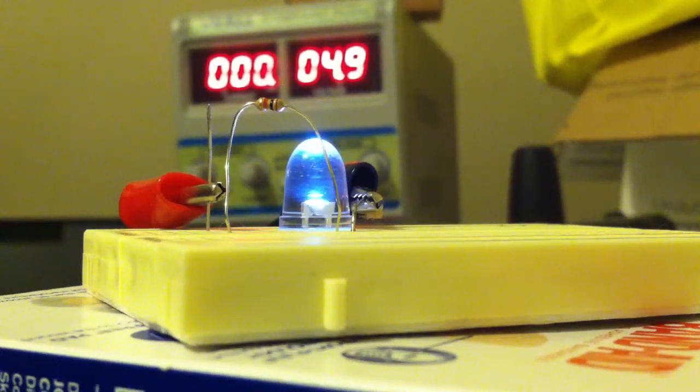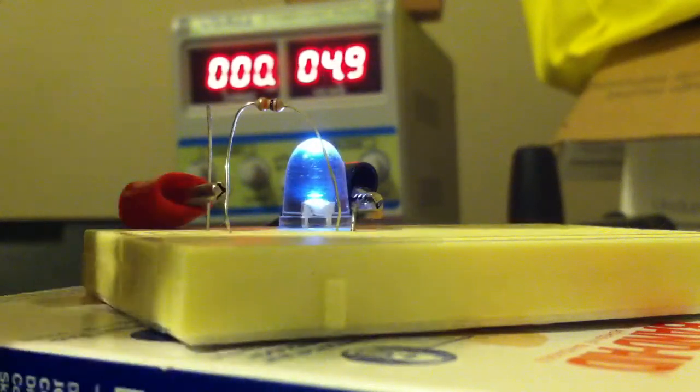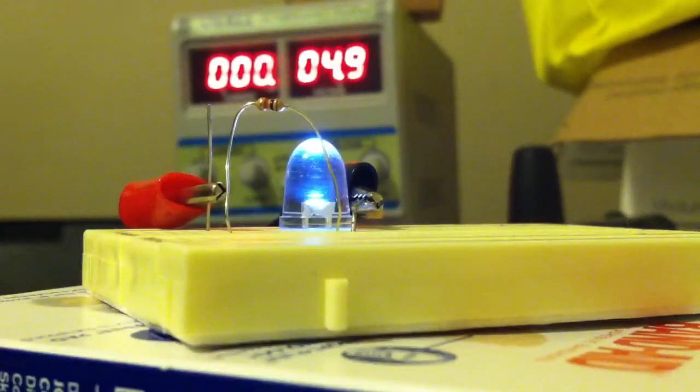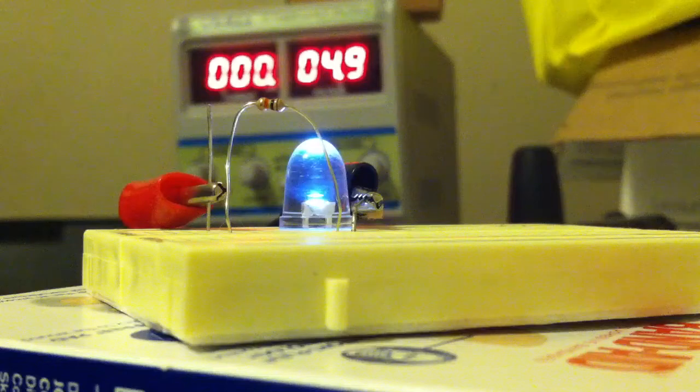Stay tuned - next week I will be talking about diodes. This guy here is a type of diode. We'll be getting into LEDs, diodes, rectifier diodes such as bridges, and zener diodes, which kind of act like a resistor in a reverse form. We'll talk about that next week. Stay tuned, thanks for watching, I'll see you next time.